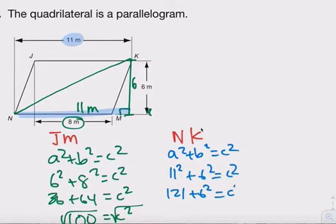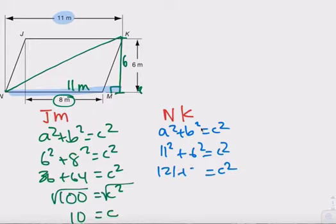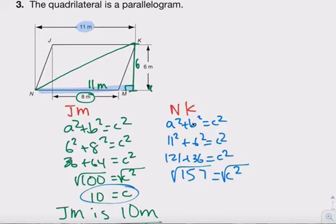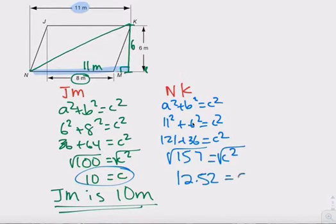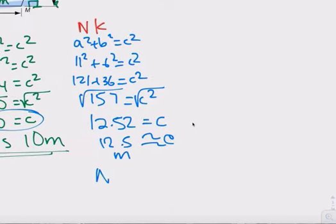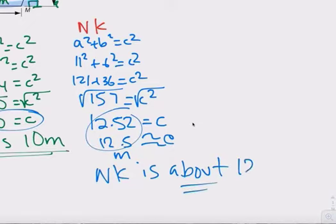121 plus 36 equals C squared. Use your calculator — clear it first. 121 plus 36 equals 157. This is not a perfect square — this is going to be irrational. Take the square root of 157. You get 12.52. So C is about 12.5 meters. N-K is about 12.5 meters — we say 'about' because we rounded.